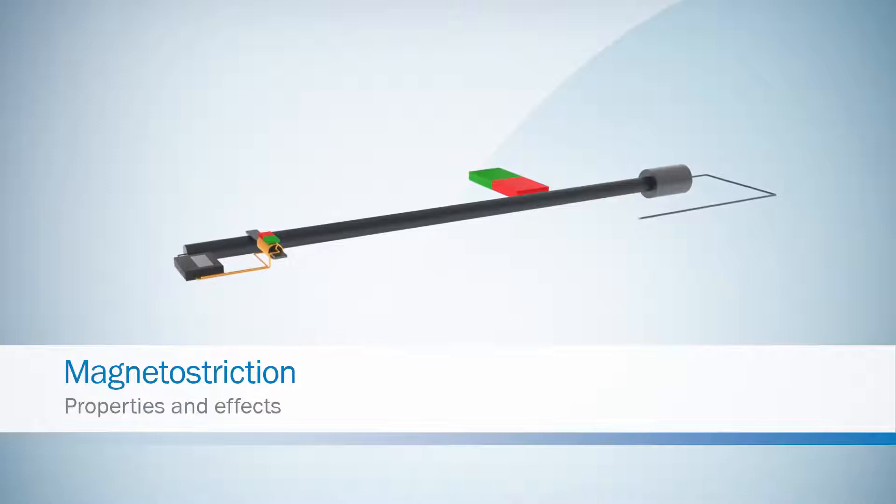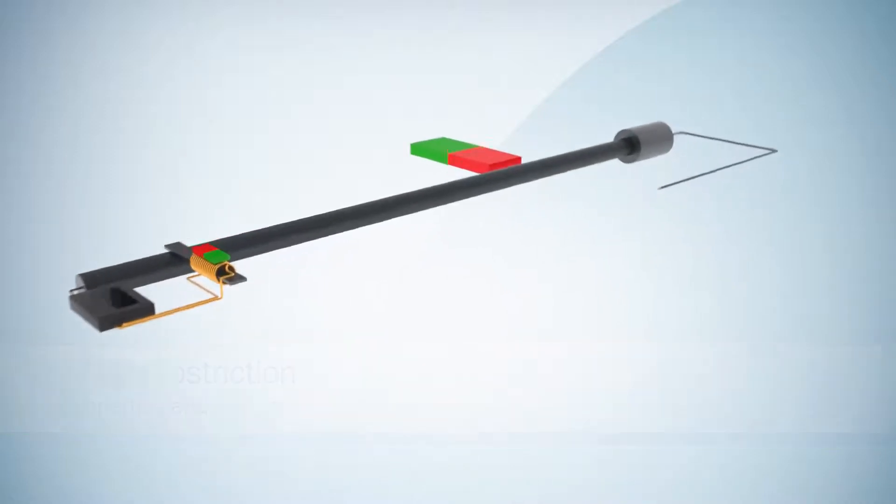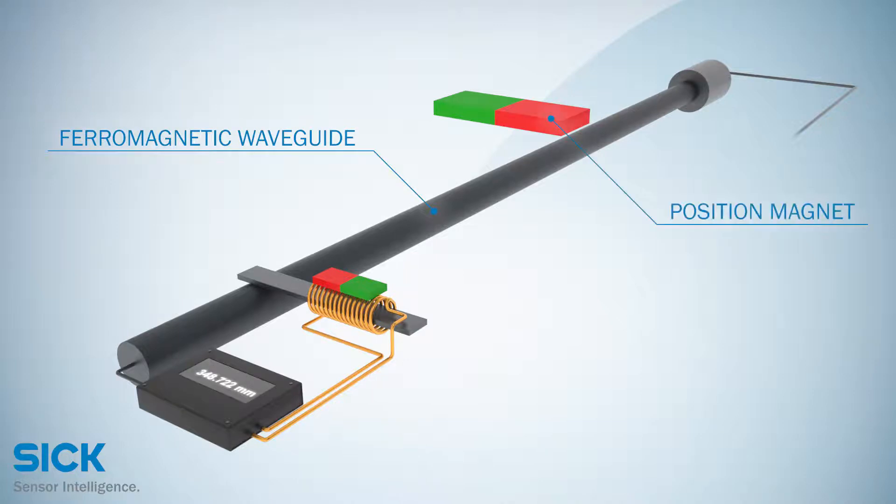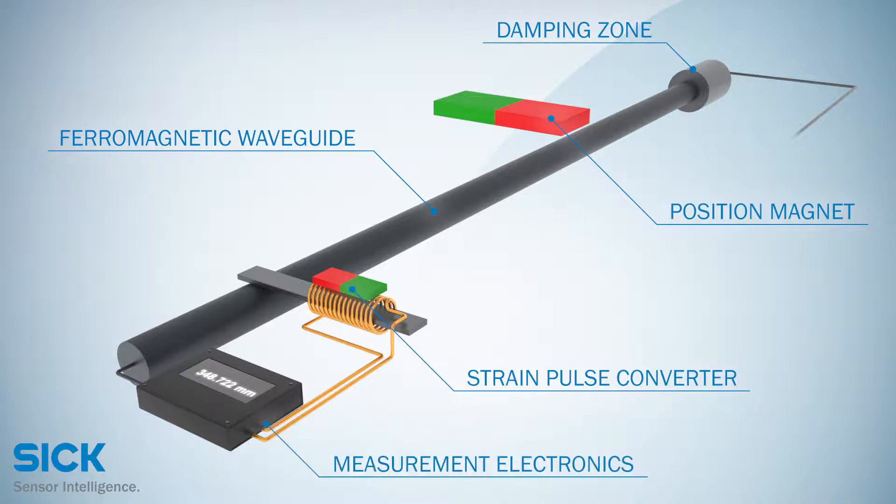SICK linear encoders use the properties and effects of magnetostrictive technology. Magnetostrictive linear encoders consist of a ferromagnetic waveguide, a position magnet, a damping zone, a strain pulse converter, and measurement electronics.